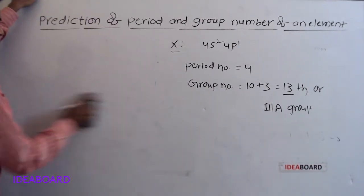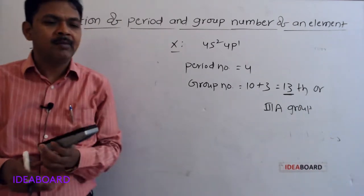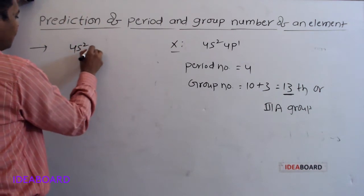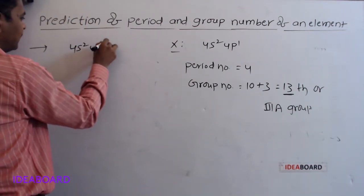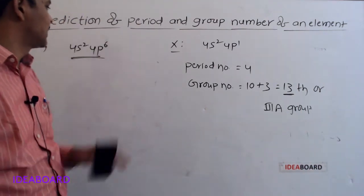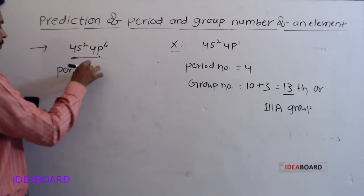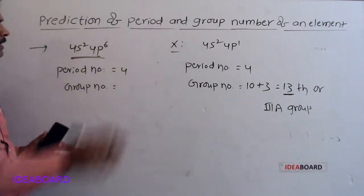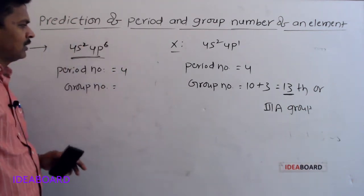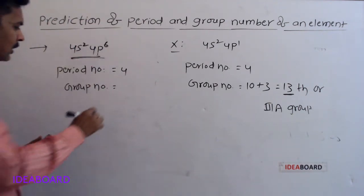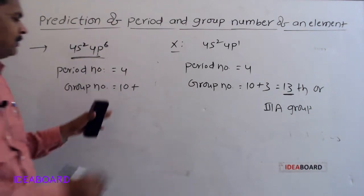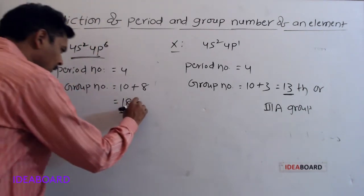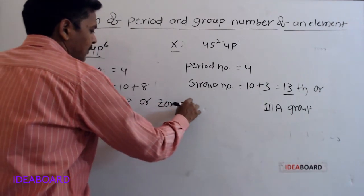Next question: for element X, the valence electronic configuration is 4s²4p⁶. What is its position in the periodic table? Period number is 4. Group number: for p block elements, 10 plus the number of valence s and p electrons equals 10 plus 8 equals 18. So it belongs to the 18th group, which is also the zero group.